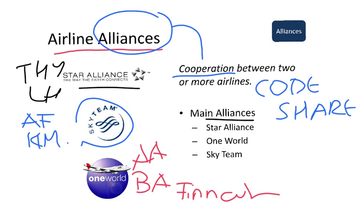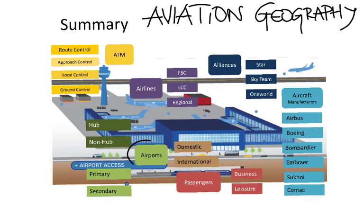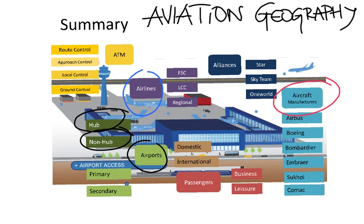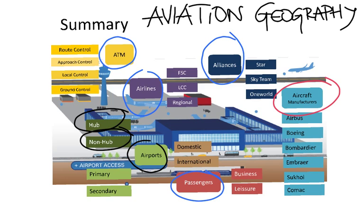Summary: We covered airports, which can be hub or non-hub. We have aircraft manufacturers — Airbus, Boeing, Bombardier, Embraer, Sukhoi, and Comac — which produce wide body, narrow body, and regional aircraft. We have airlines with two main categories: full-service carriers and low-cost carriers such as Pegasus in Turkey. We have ATM making sure we avoid collisions, with different control types. We have cooperation between airlines in three alliances: Star Alliance, Sky Team, and One World. And we have passengers, classified by business and leisure based on travel purpose, and domestic versus international based on destination. Thank you.